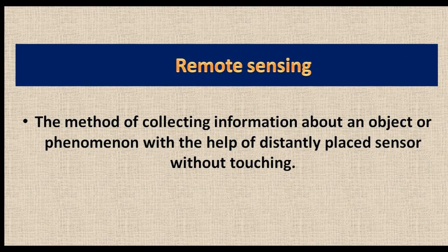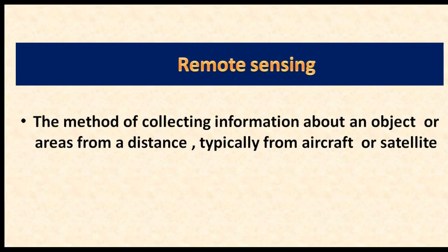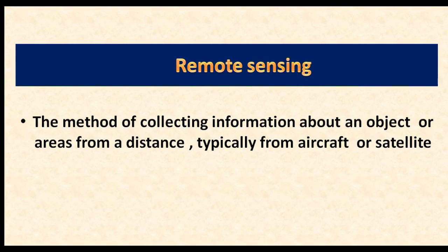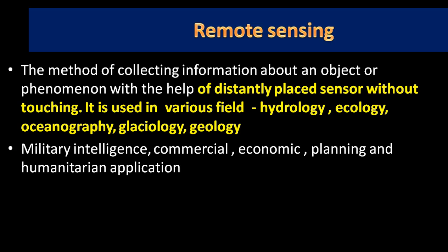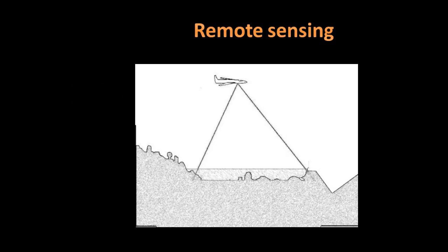Remote Sensing is the method of collecting information about an object or phenomenon with the help of a distantly placed sensor without touching. It can also be described as the method of collecting information about an object or area from a distance, typically from an aircraft or satellite. For example, taking a photograph of Earth's surface with a camera placed in an aircraft is Remote Sensing.